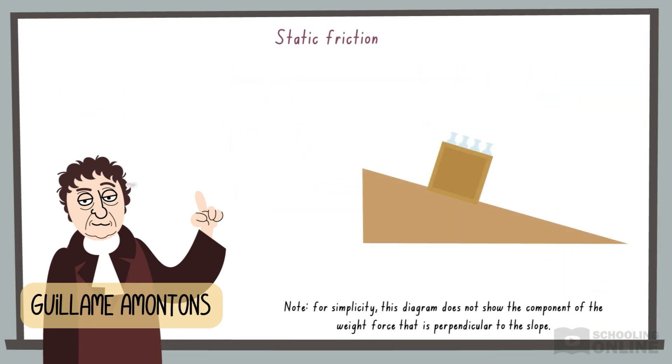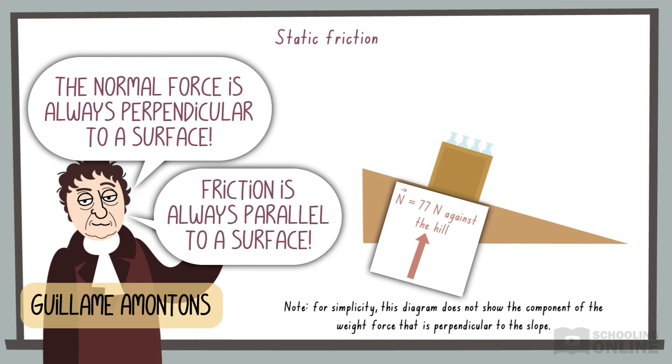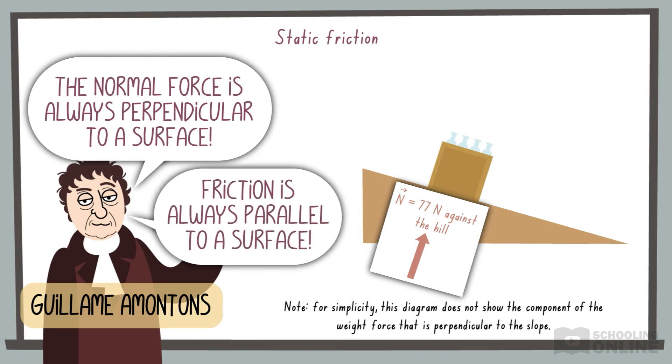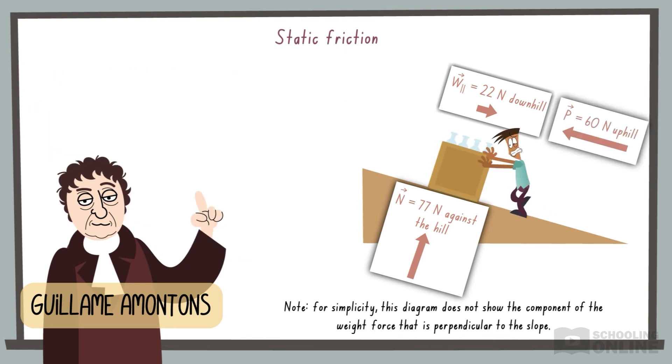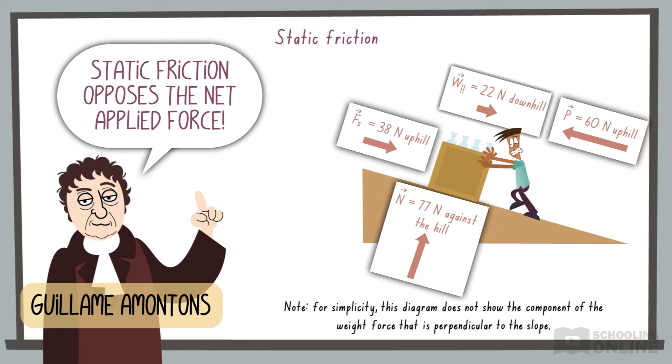Remember, the normal force is always perpendicular to a surface, but friction is parallel. In this example, gravity gives the crate a tendency to slide downhill. Static friction pushes it uphill to prevent any sliding motion. But if someone tries to push it uphill, static friction will point in the opposite direction to prevent motion.